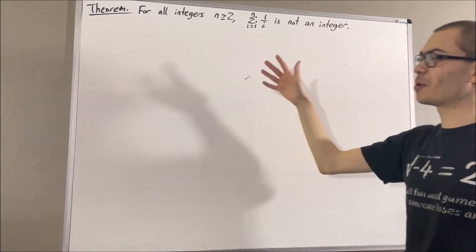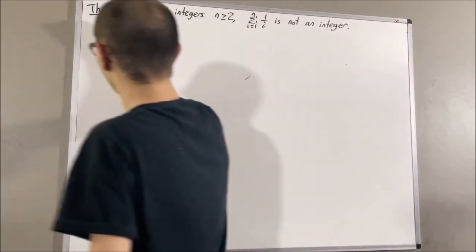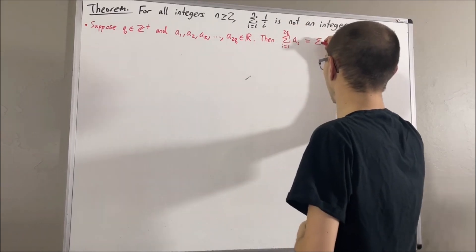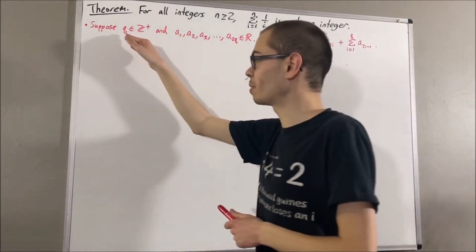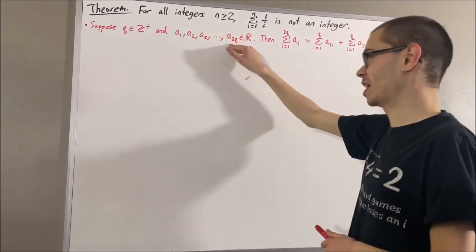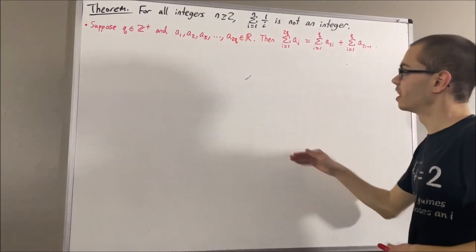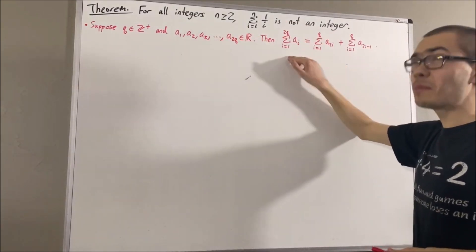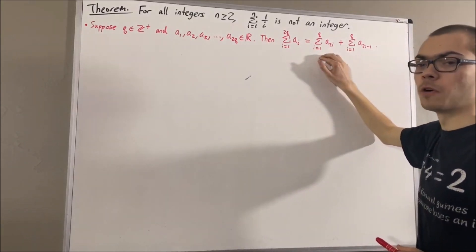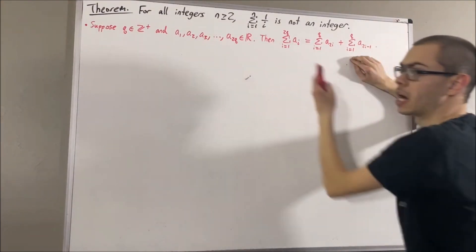In proving this theorem, we are going to be using some preliminary results, one of which is as follows. Suppose q is a positive integer and a1, a2, a3, dot dot dot, a_{2q} is a list of an even number of real numbers. Then the sum of all those real numbers can be re-expressed as the sum of the real numbers with an even index plus the sum of the real numbers with an odd index.